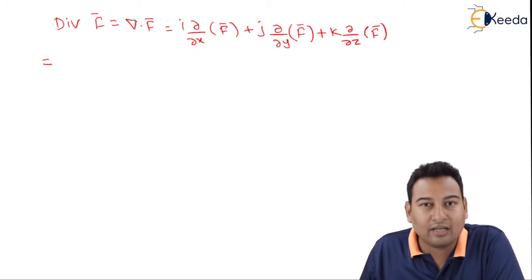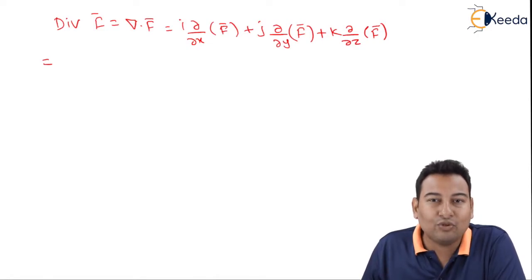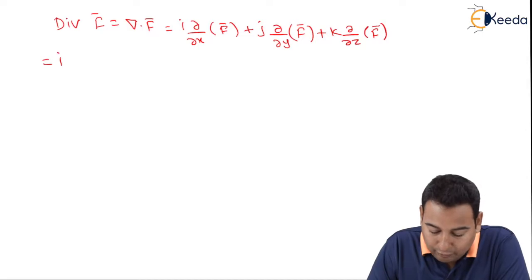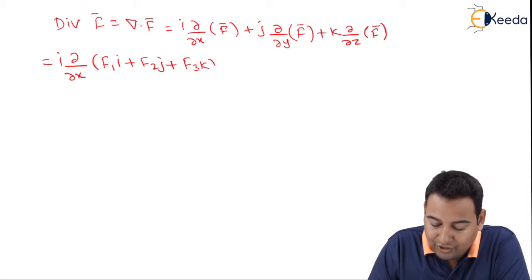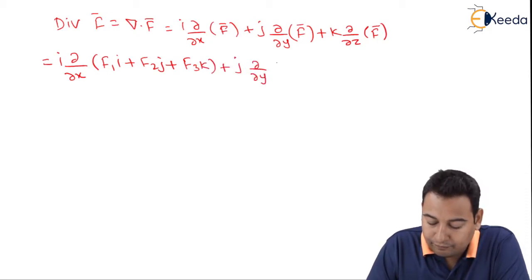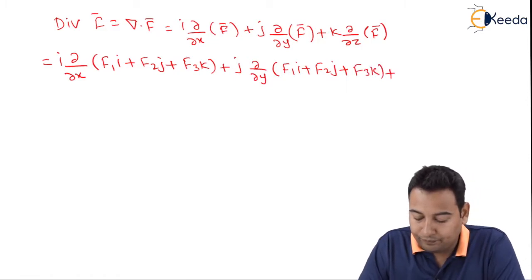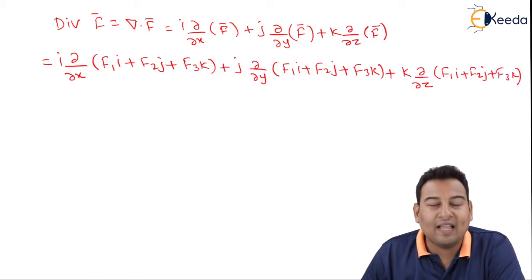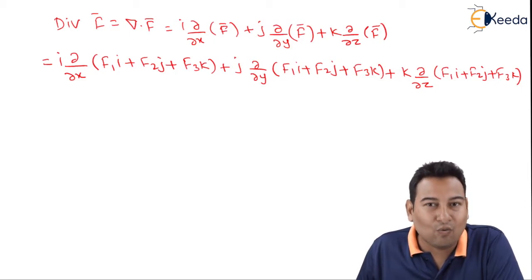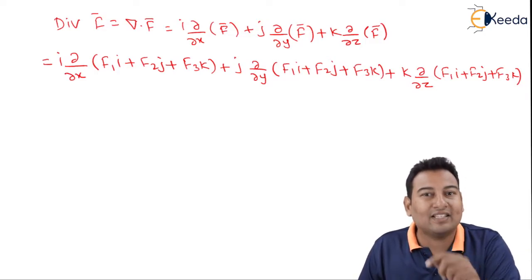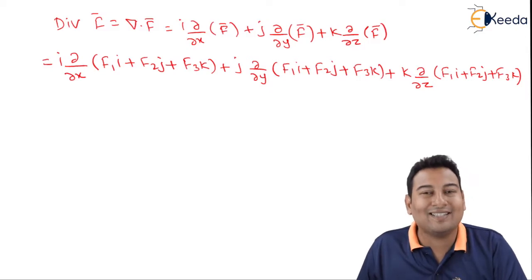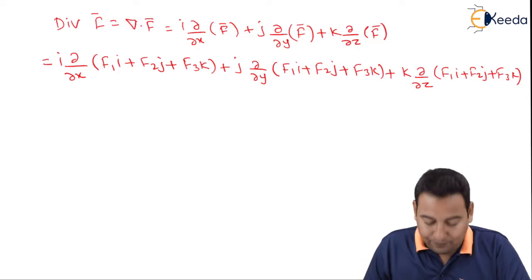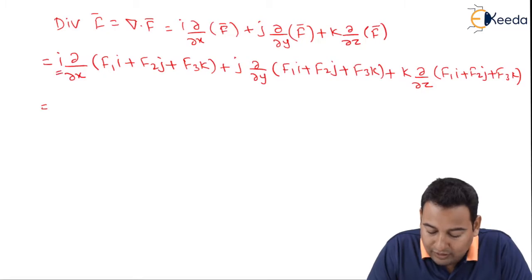I'm deriving the general formula — not related to this problem. I'm assuming f̄ as f1·i + f2·j + f3·k. You might be aware that i·i = 1, j·j = 1, k·k = 1 — meaning if the unit vectors are the same the answer is one — and if they are different, such as i·j, j·k, or i·k, the answer is zero.